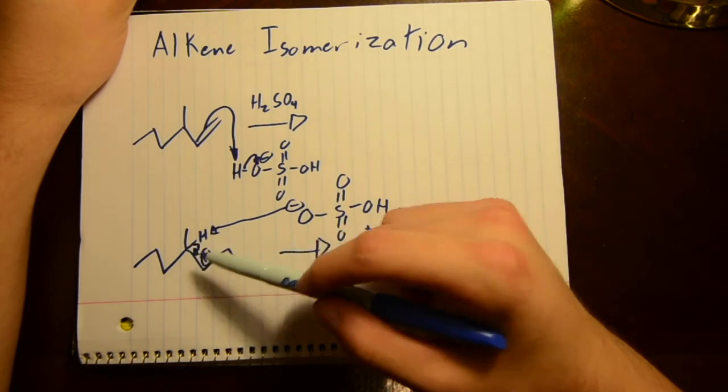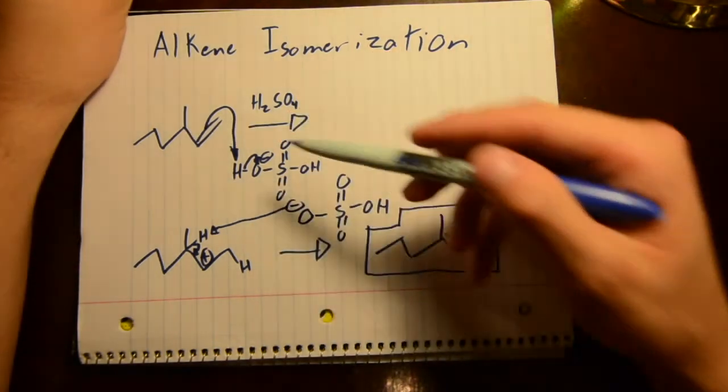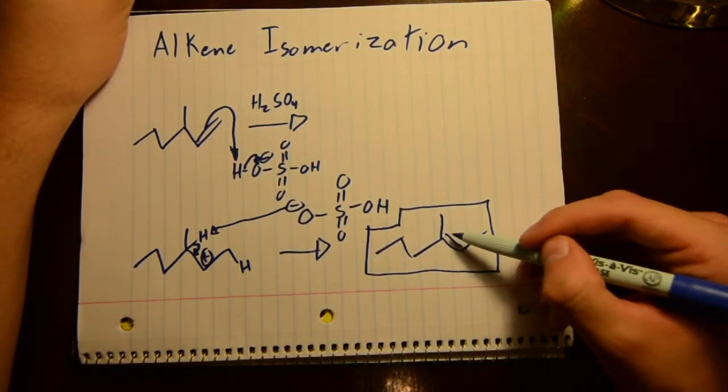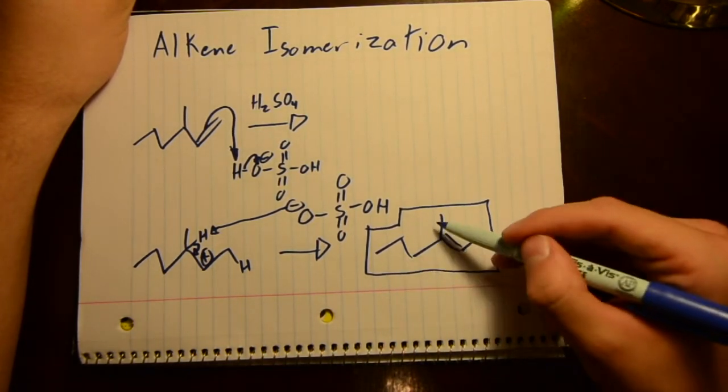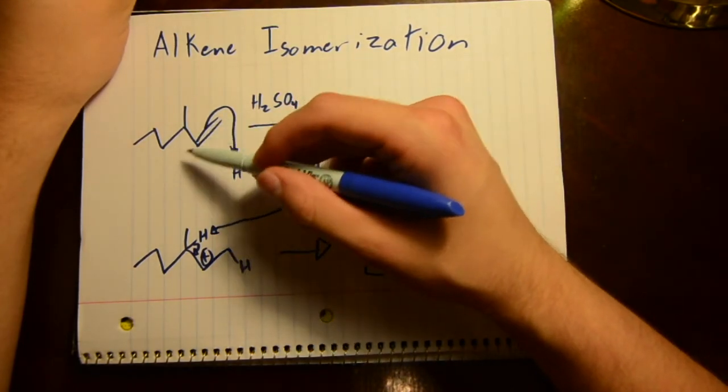Ultimately, you get this product. This product is more favorable than the starting material because you have a double bond where it's more stable—it has more carbons connected to it, whereas it only has one carbon here.